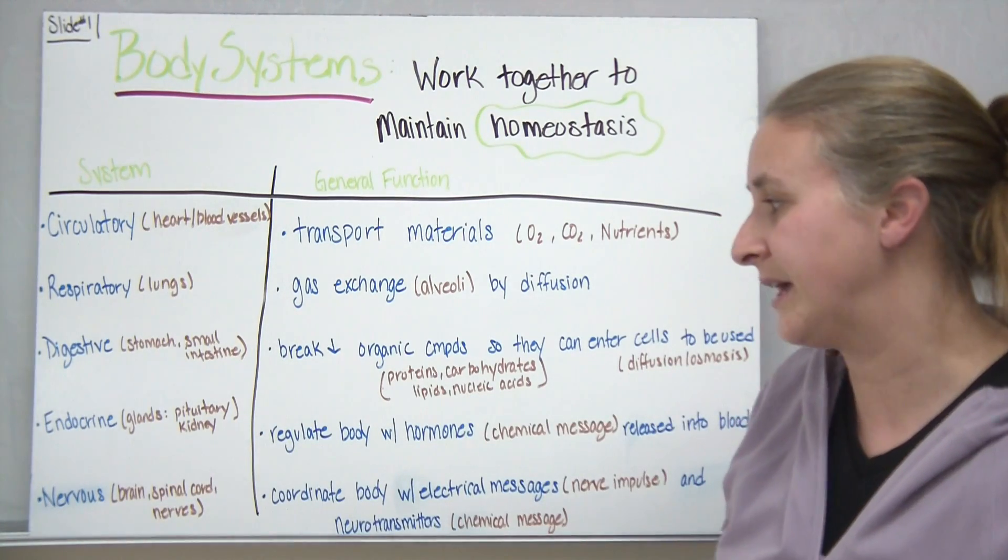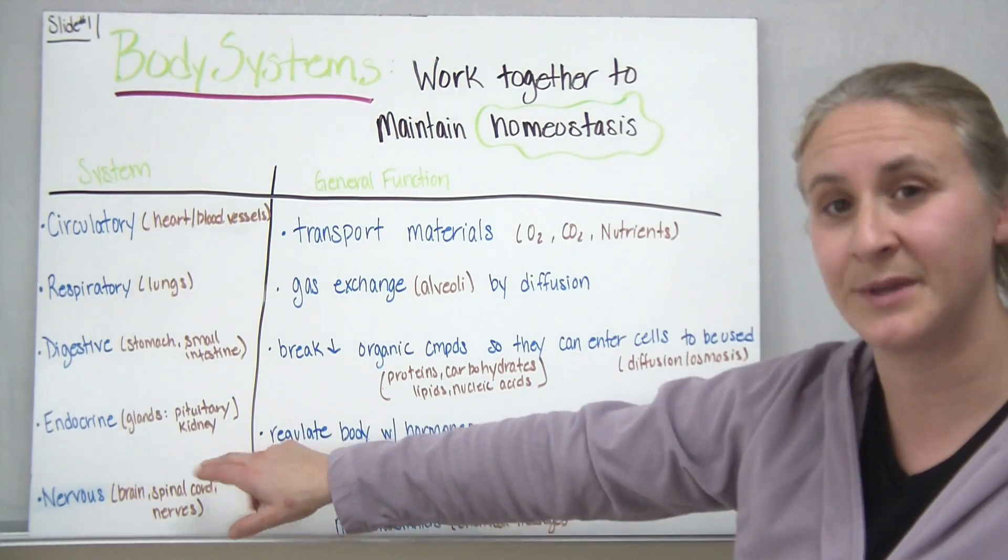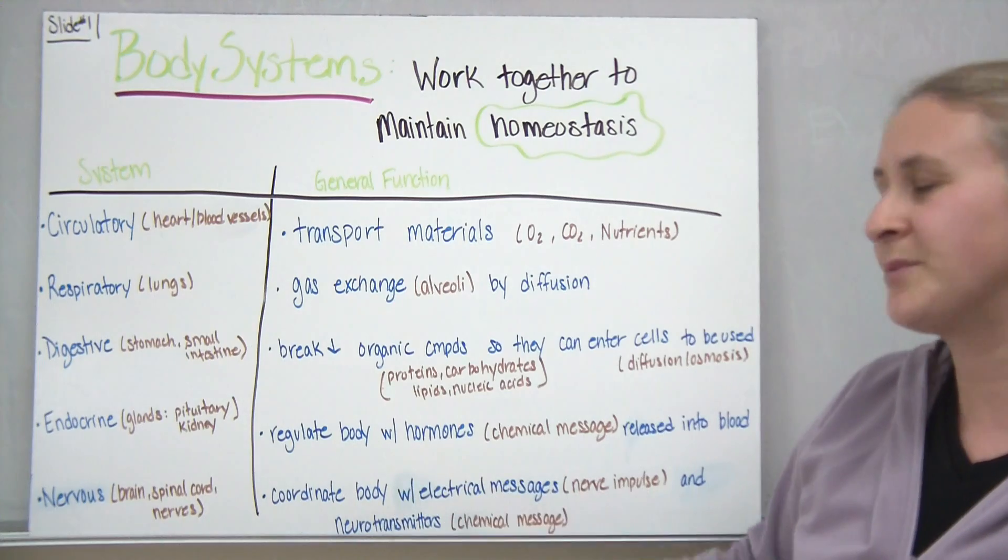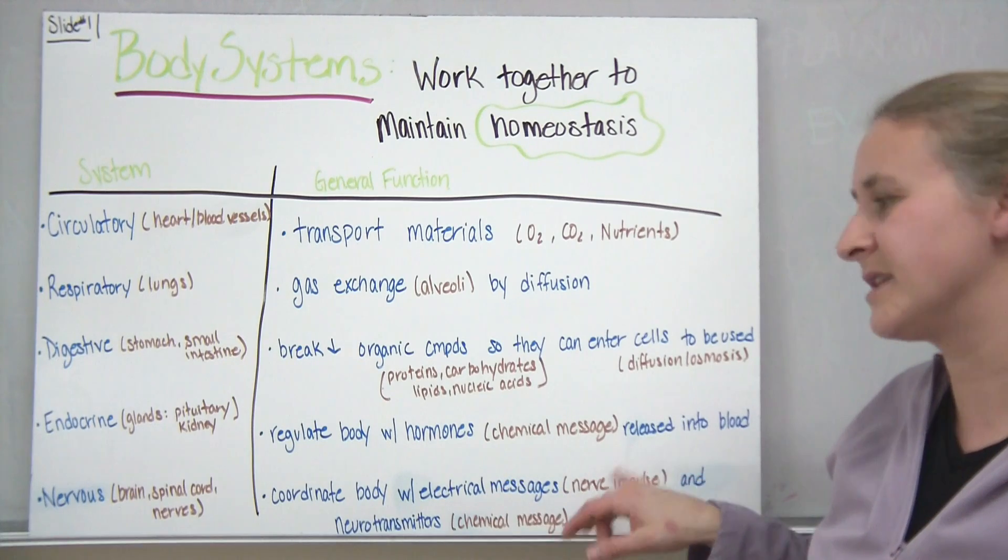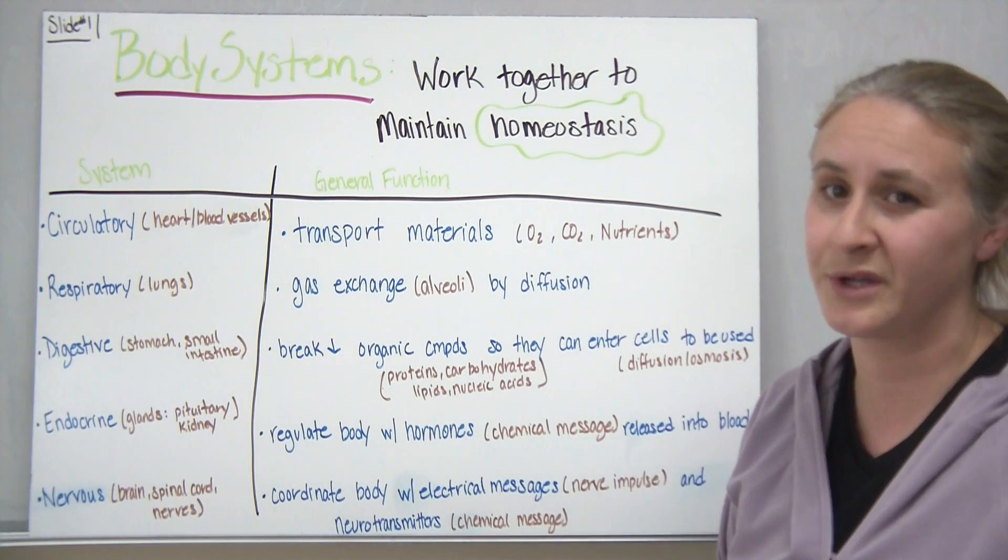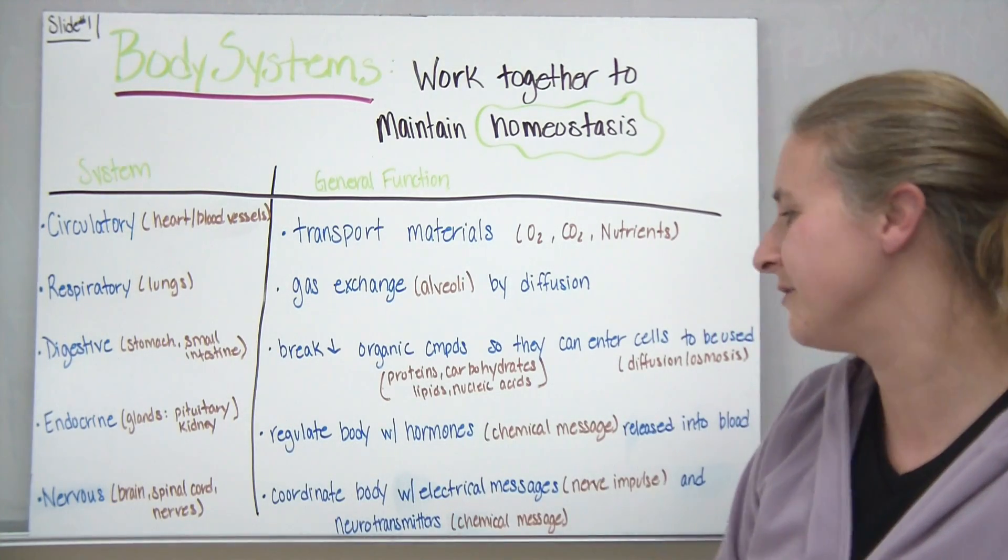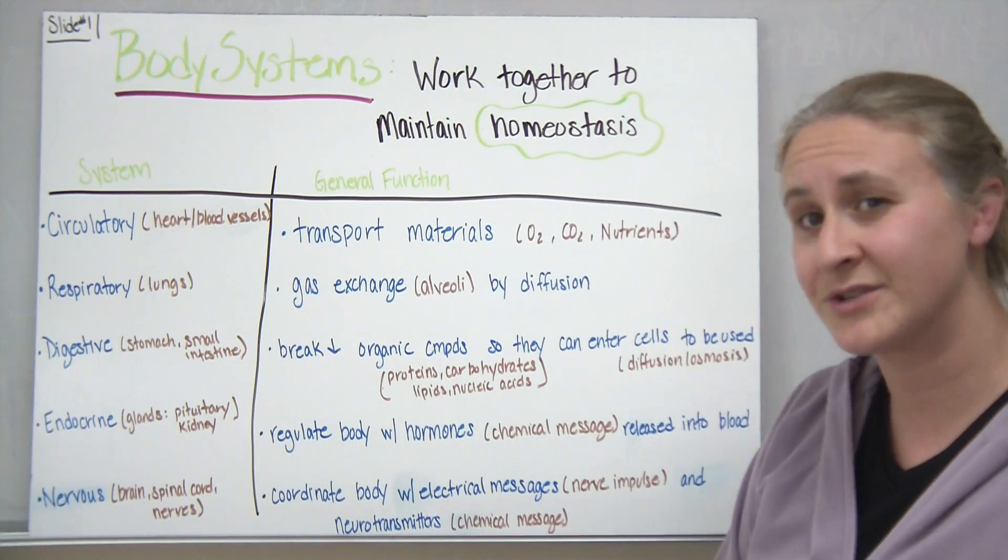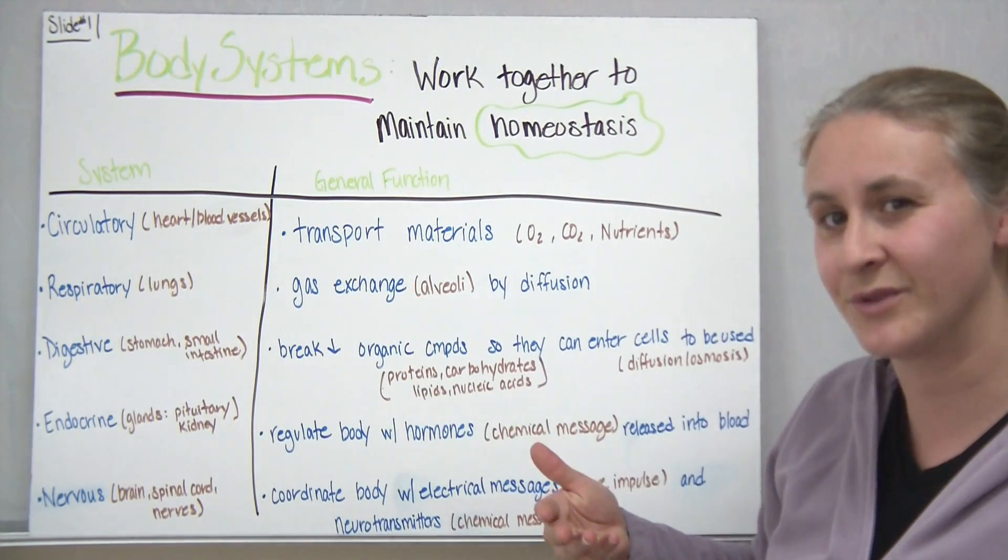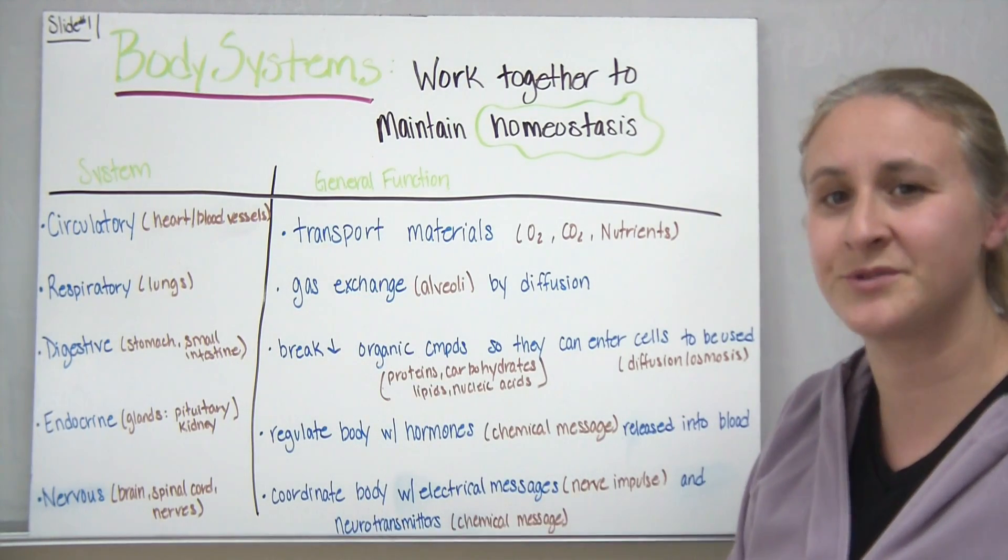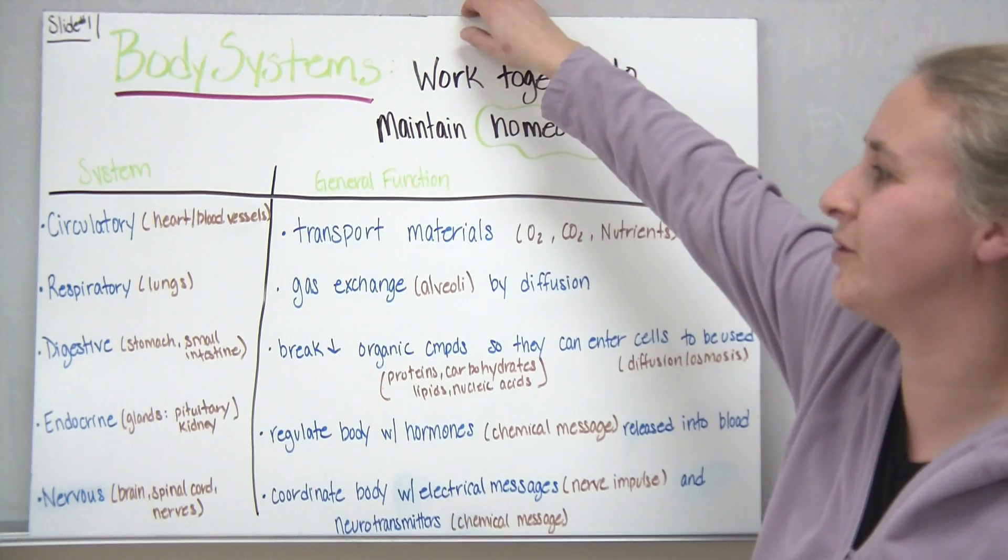We have our endocrine system which include the glands, some examples of the glands could be the pituitary gland or even the kidneys. We have the adrenal glands on top of those. They help to regulate body hormones which remember hormones are chemical messages, they're actually proteins that get sent into the bloodstream in order to be sent to target organs for some sort of action to take place. We have our nervous system which includes the brain, the spinal cord, and nerves and that helps to coordinate body with our electrical messages. Remember we have our nerve impulses that are electrical messages that get sent through the nerves and then we also have neurotransmitters which are chemical messages that get sent in between each nerve which can help to give it a little bit further control.